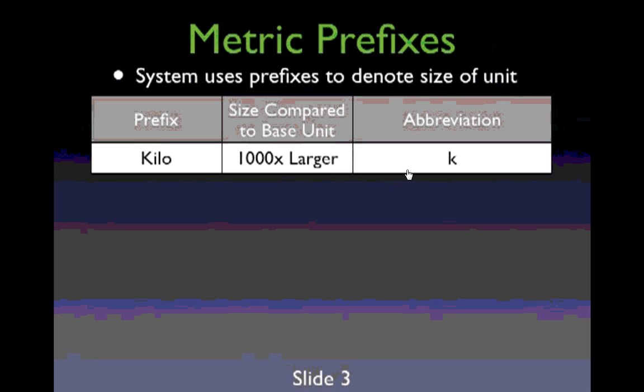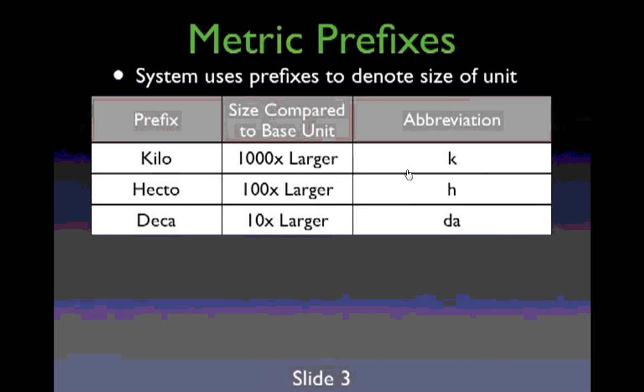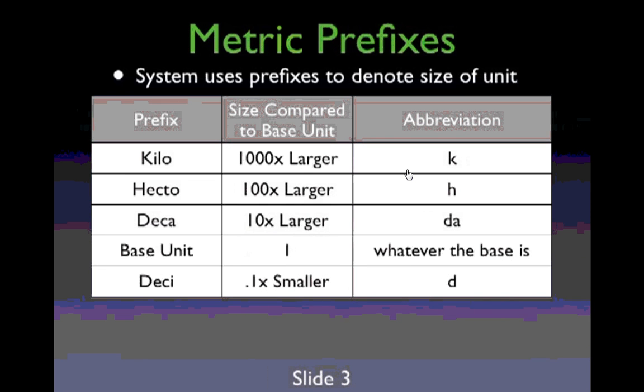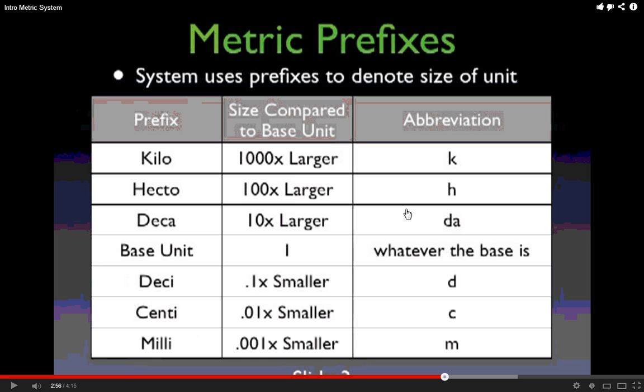The prefixes indicate the relationship of the measurement to the base unit. A kilogram is a thousand times larger than a gram, and it's a lowercase k. Hecto and deca you don't see very much, but you need to record this information. The base unit you're going to write a one, and it's whatever the base is—meter, liter, or gram. Deci is one tenth smaller, centi is one hundredth, and milli is one thousandth.